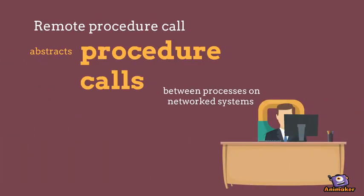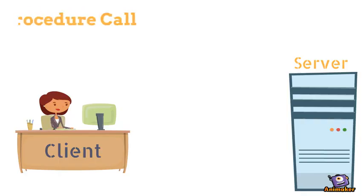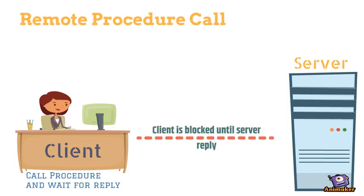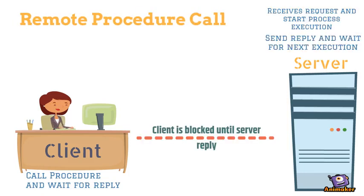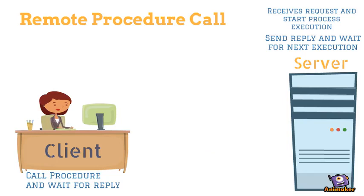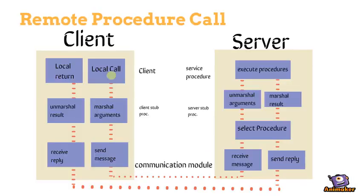Remote Procedure Call abstracts procedure calls between processes on network systems. The client calls the procedure from the server and waits for a reply. The server receives the request and starts process execution. The client is blocked until the server replies, then the server sends a reply and waits for the next execution.